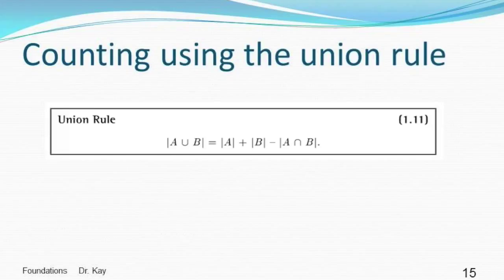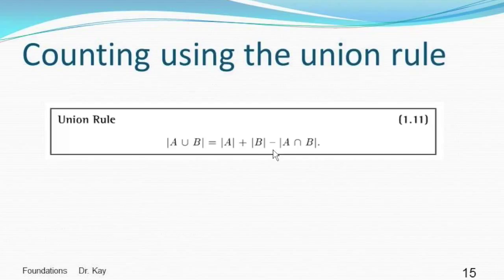Finally, if you want the size of the union of two sets, the resulting set's size is however big A was plus however big B was, minus however many elements they had in common — that is, |A ∪ B| = |A| + |B| − |A ∩ B|.